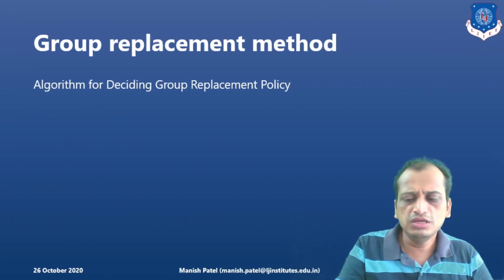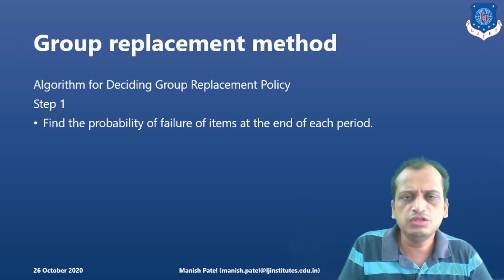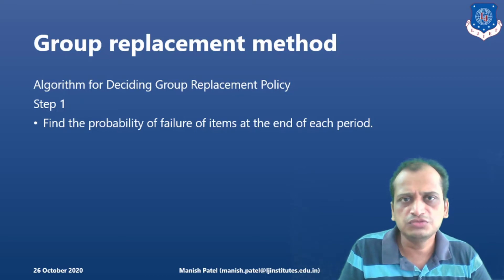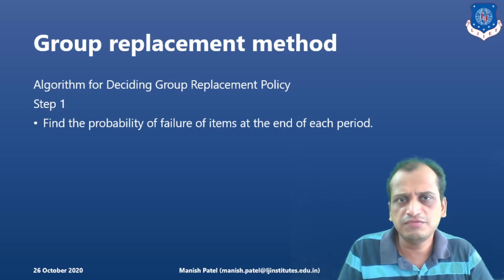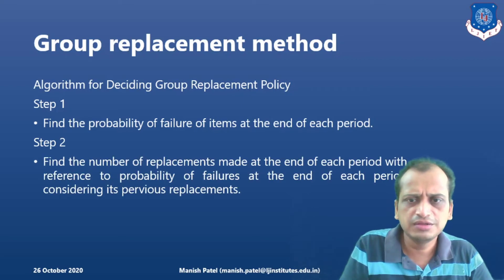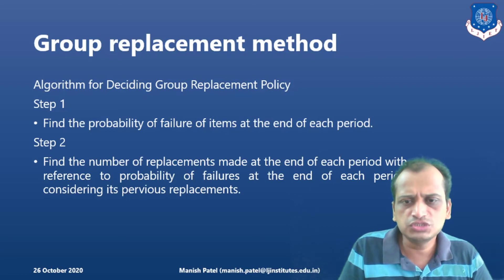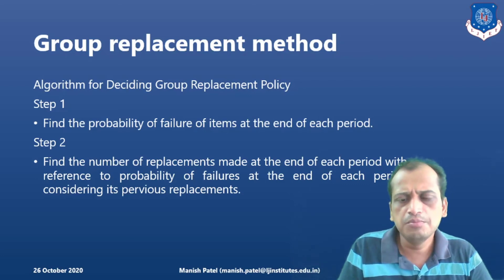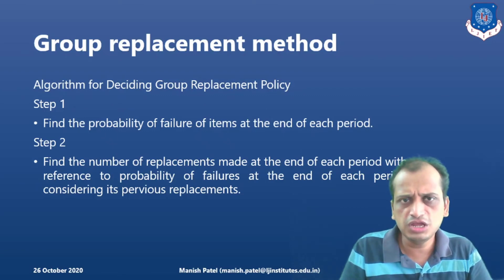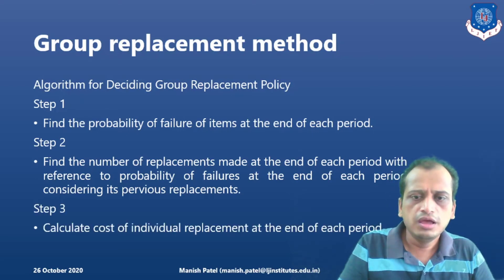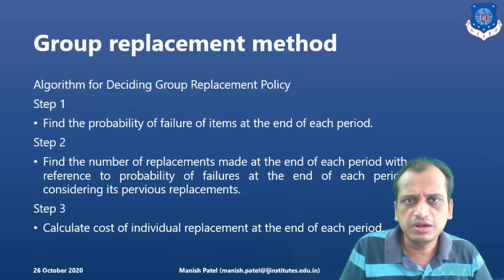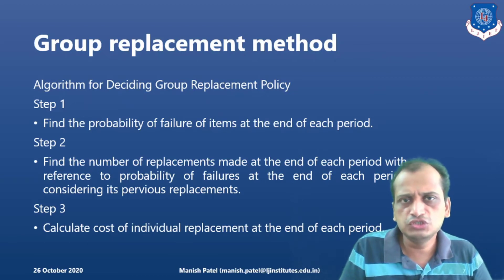Regarding the group replacement policy methodology: in the first step, we find out the probability of failure of items at the end of each period. In the second step, we find the number of replacements made at the end of each period with reference to the probability of failures, considering the previous replacements. The third step is to find out the individual replacement cost — that is the individual replacement cost policy.